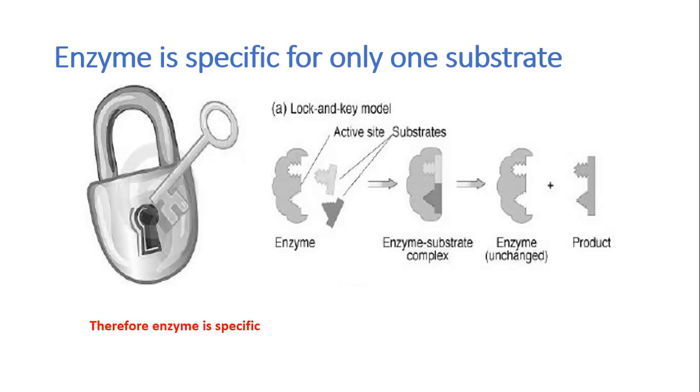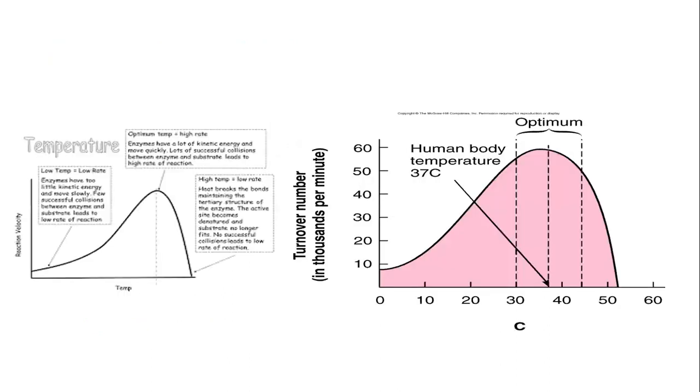Therefore, enzyme is specific. For example, starch is digested only by amylase. Protease acts only on protein.